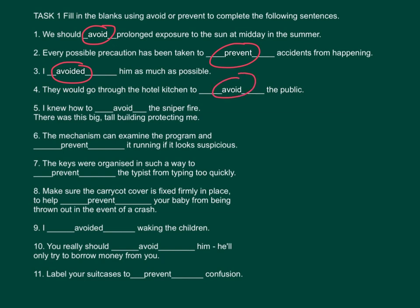Number 3: I avoided him as much as possible — 我盡可能地避開他。 Number 4: They would go through the hotel kitchen to avoid the public — 他們會穿過飯店廚房而避開大眾。 Number 5: I knew how to avoid the sniper fire — there was a big tall building protecting me. 我知道怎樣躲過追擊。 Number 6: The mechanism can examine the program and prevent it running if it looks suspicious — 这个装置会检查程式，並且防止可疑程式的執行。 Number 7: The keys were organized in such a way to prevent the typist from typing too quickly — 按键是以这样的规则排列，以預防打字者打得太快。